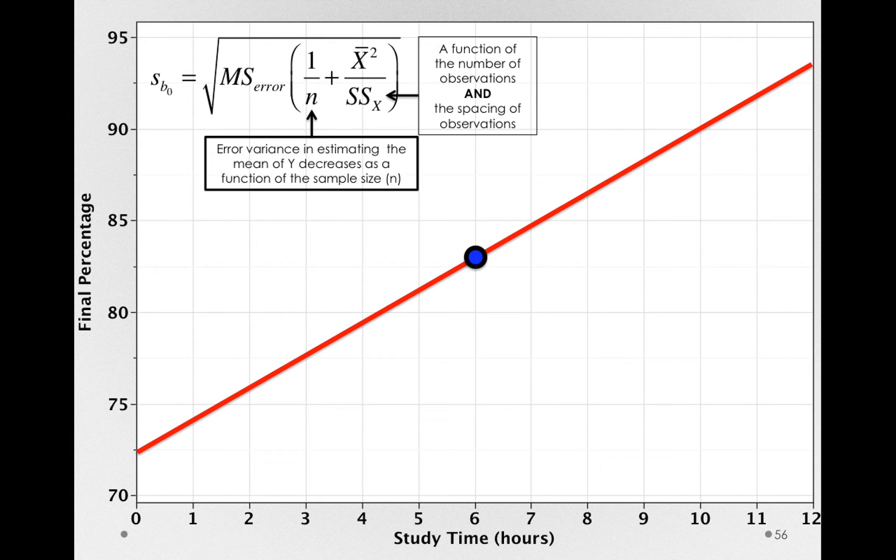Remember, our line will always go through x-bar, y-bar. So to the degree that we can estimate where y-bar is, we will better estimate where the intercept is. And let's see this, if I move around the line, if there is tremendous error in estimating the mean of y, well the intercept gets moved around quite a bit, just as much as the mean of y experiences error.